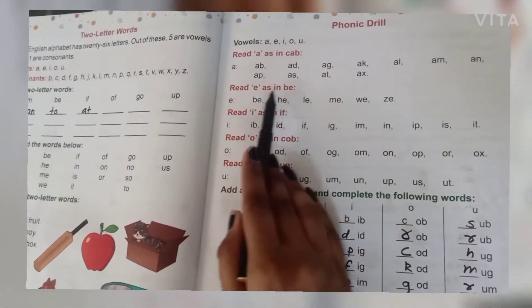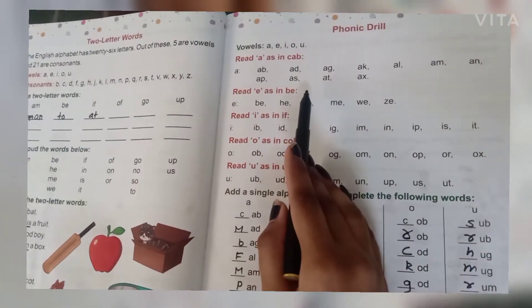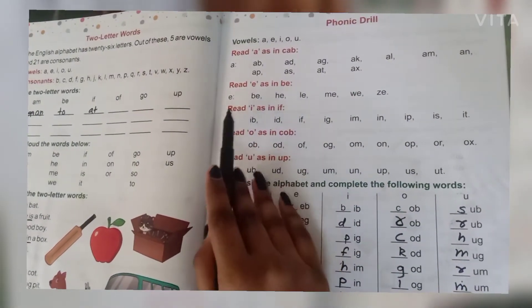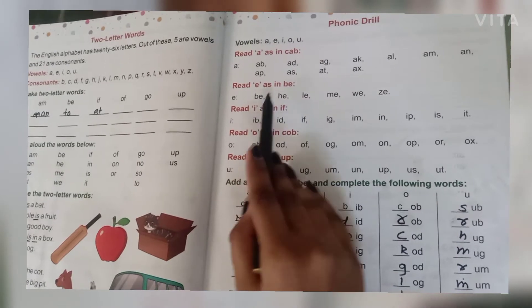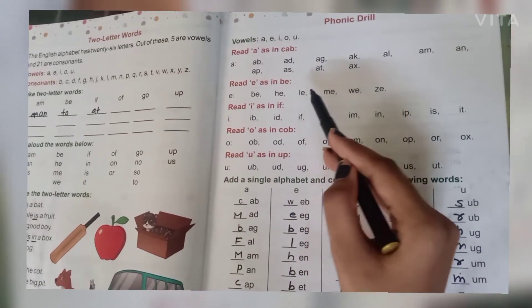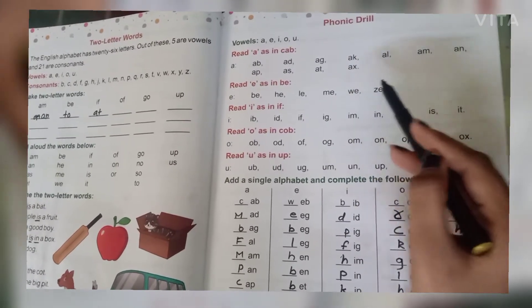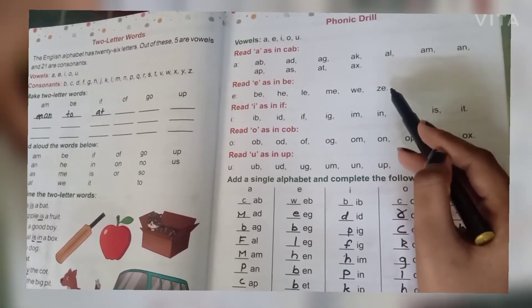Read E as in be. So you have to read E as in be, with the sound E. B-E, be. H-E, he. L-E, le. M-E, me. W-E, we. Z-E, ze.